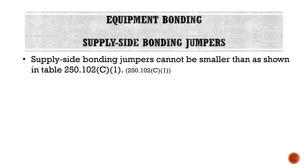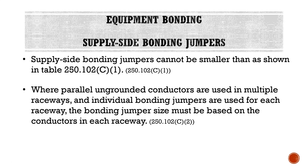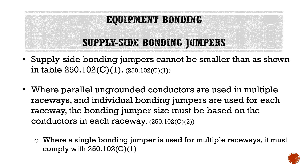Talking about our supply-side bonding jumper — we discussed this in our lecture on separately derived systems. Supply-side bonding jumpers cannot be smaller than shown in Table 250.102 C1. Where parallel ungrounded conductors are used in multiple raceways and individual bonding jumpers are used for each raceway, the bonding jumper size must be based on the conductor in each raceway — we can't base all bonding jumpers on just one conductor size. Where a single bonding jumper is used for multiple raceways, it must comply with 250.102 C1.